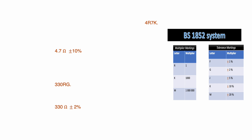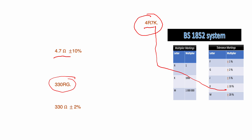For example, a resistor marked '4R7K': the R in the middle acts as a decimal point, so it reads 4.7 ohms, and K indicates ±10% tolerance. Another example: '330RG' — R is the multiplier (multiply by 1) and G is the tolerance (±2%). So the final value is 330 ohms ±2%.